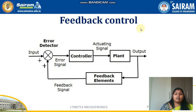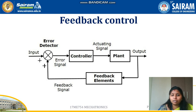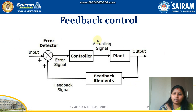The next topic is feedback control. In a control system, whenever an input is given, the output should be similar to the input. When there is a deviation, the feedback signal indicates it to the error detector, which compares the input and the obtained output. When there is a deviation, the process repeats. Here you can see an error detector, a controller, a plant where the process actually takes place, and feedback elements. Once the output is not the same as the input, the feedback element informs the error detector and the process repeats.